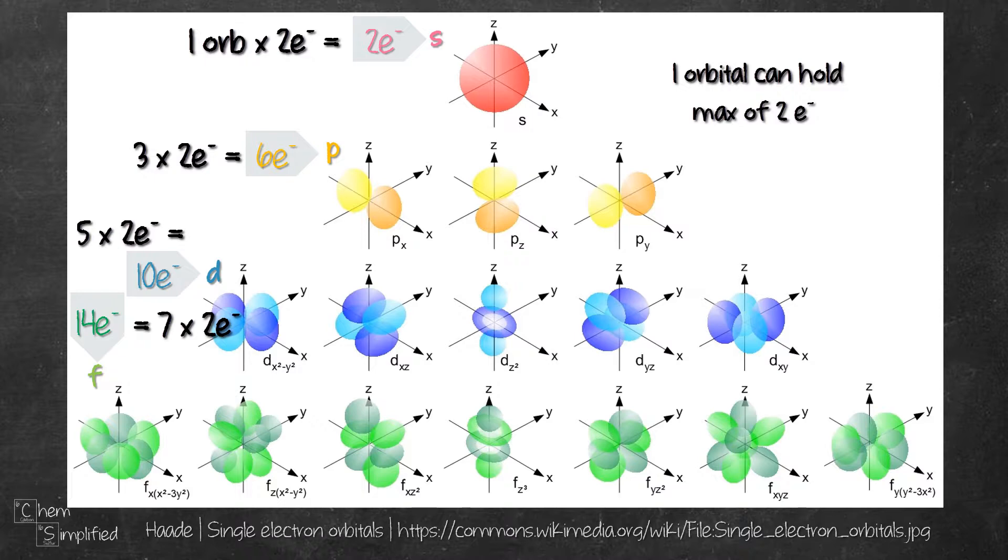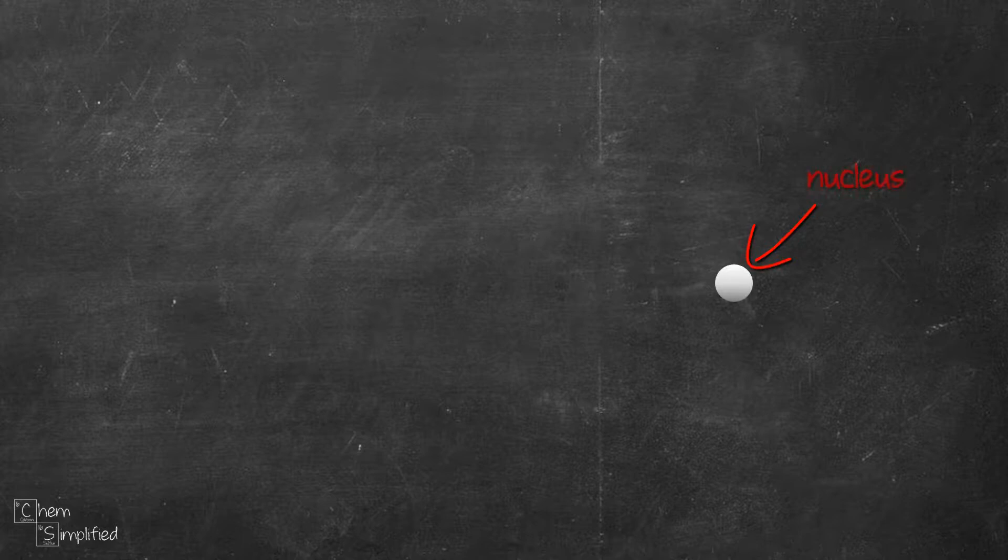We know that in an atom, protons and neutrons are located inside the nucleus, while the electrons are located outside the nucleus in electron shells. The nearest shell to the nucleus is going to be shell number one.